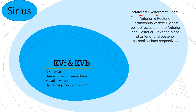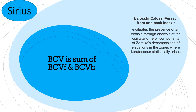KV is the keratoconus vertex — front (F) and back (B). A positive value means steeper inferior hemisphere, which normally occurs in keratoconus, and a negative value means steeper posterior or superior surface. BCV is the sum of BCV-F and BCV-B, and it evaluates the presence of ectasia through analysis of coma and trefoil components.